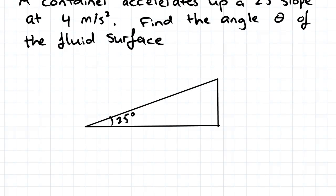So we need to separate acceleration up the slope into vertical and horizontal acceleration. So here we've got 4 meters per second squared acceleration up the slope. We've got a slope angle of 25 degrees.